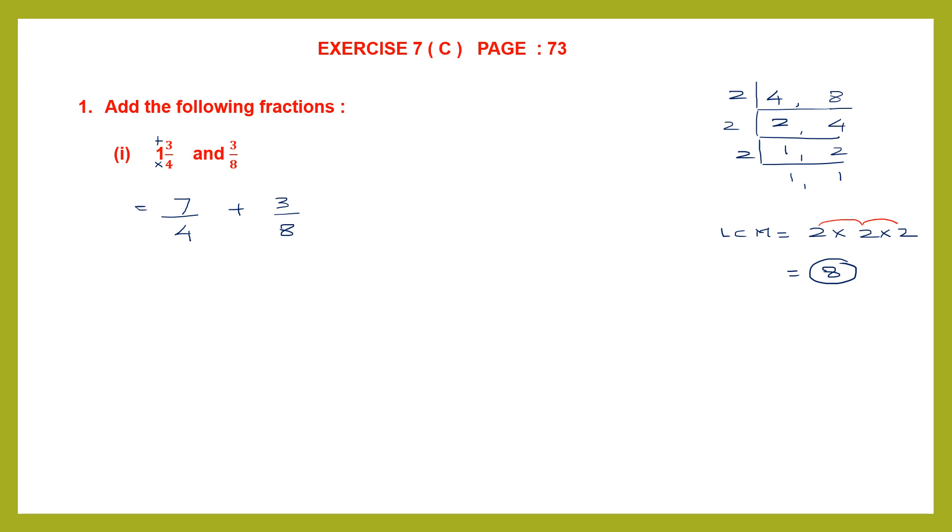Now we're going to use this LCM as the common denominator here. So now look at the first fraction 7 by 4. The denominator is 4, so we're going to multiply 4 by 2 to get this 8. 4 times 2 is 8. When you multiply the denominator by 2 you have to multiply the numerator also by 2. So 7 times 2 is 14. So that is our numerator.